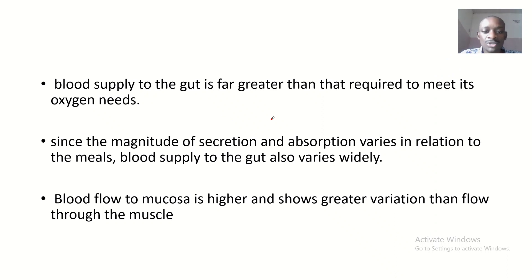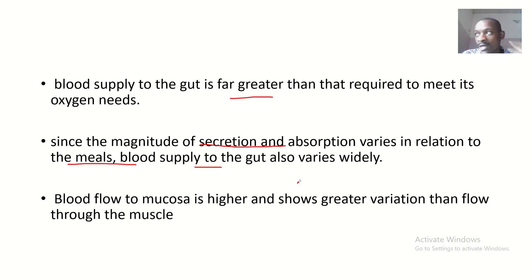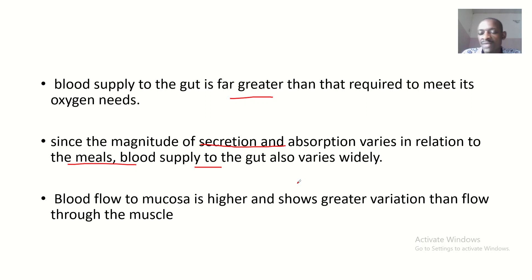The blood supply to the GIT is far greater than that which is required to meet its needs — it is very abundant. The magnitude of secretion and absorption varies in relation to meals, so blood supply to the gut also varies widely. Foods that require more effort to digest will demand a greater blood supply, while easily digested foods like fruits require less.